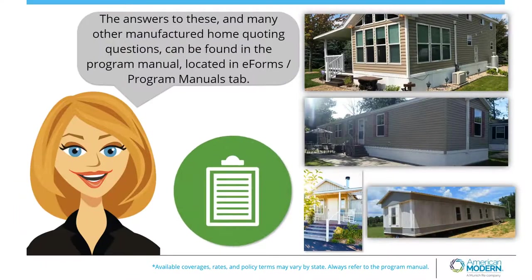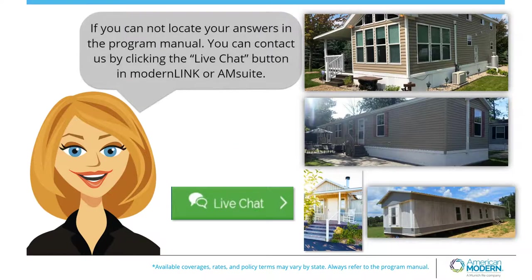The answers to these and many other manufactured home quoting questions can be found in the program manual located in the e-forms. If you cannot locate your answers in the program manual, you can contact customer service by using the live chat button on ModernLink and AmSuite.